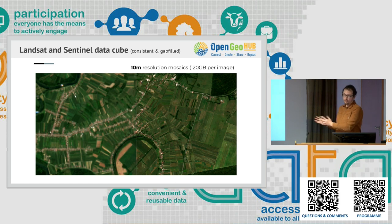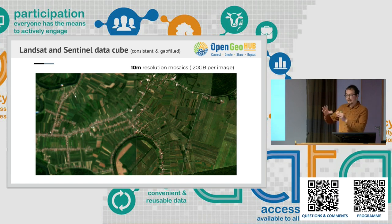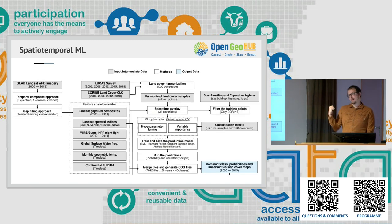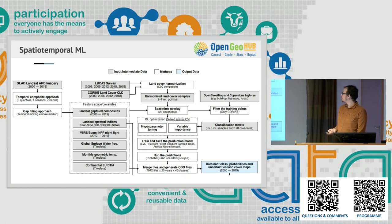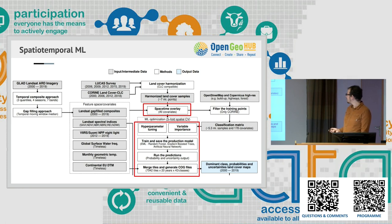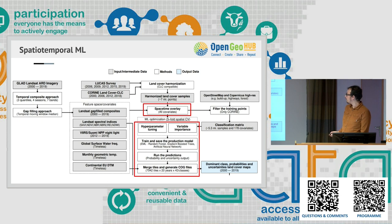This is what we call the DataCube: the same grid cell, the same pixel size, the same bounding box — everything is a perfect stack that you can use to develop different applications and research. On top of this, we also included night-light images, different spectral indices for Landsat, and digital terrain model data as additional covariates.